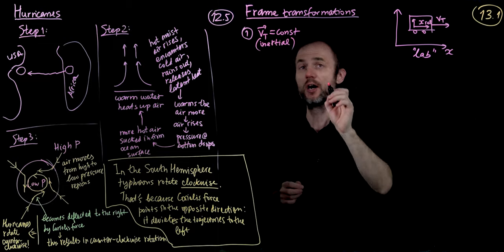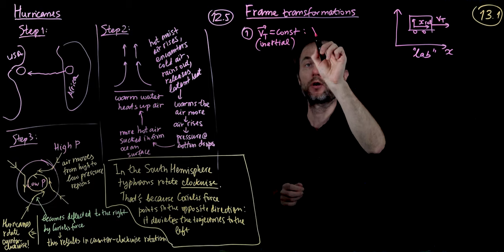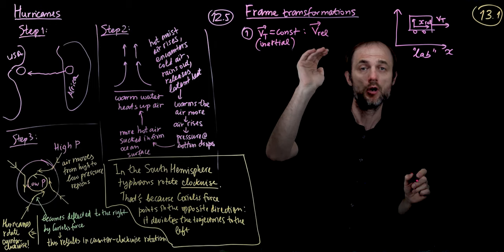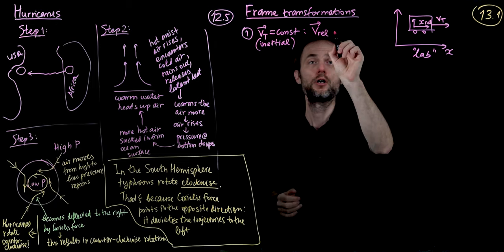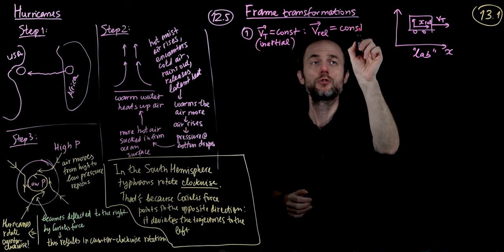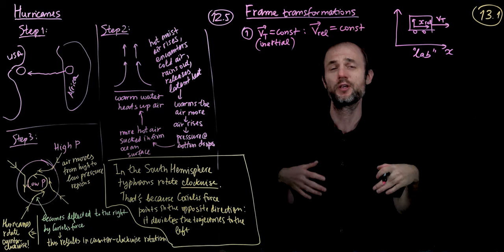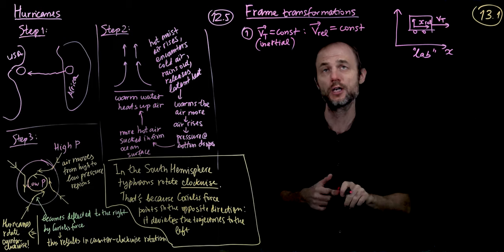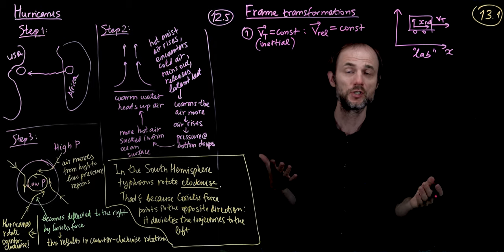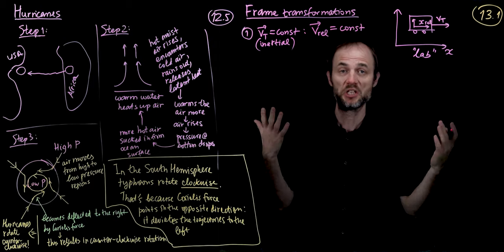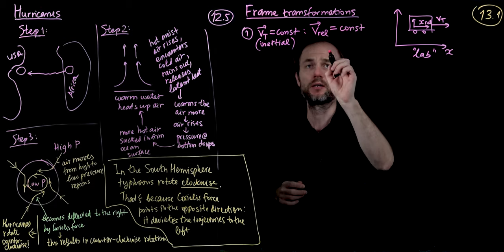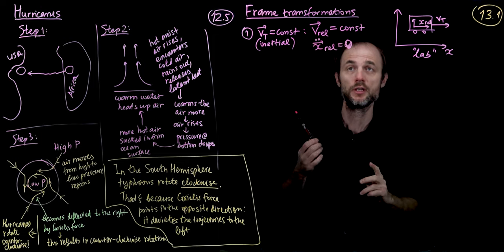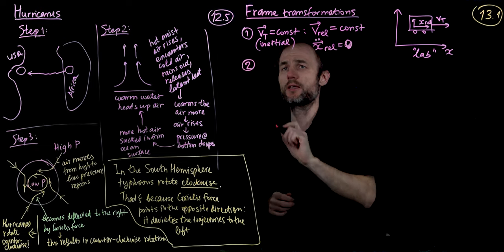What we found is that our equations of motion, in terms of the coordinates of the moving frame, reduce to the same equations of motion as in the lab frame. Equations of motion look exactly the same way in all inertial frames. So in the absence of external forces, the velocity of our body stays constant, and x-double-dot-relative is equal to zero.